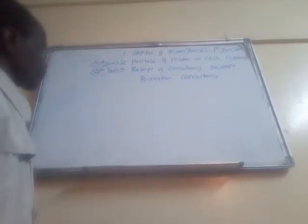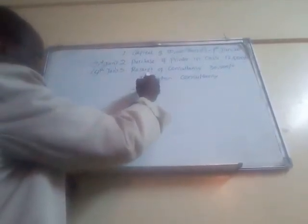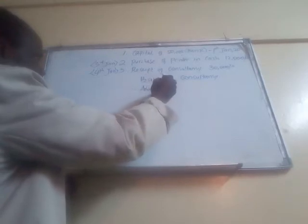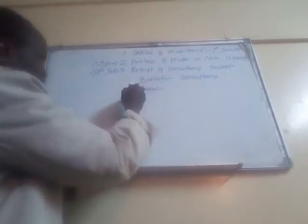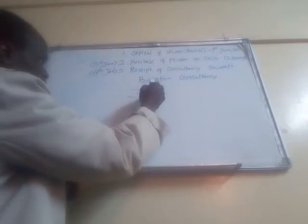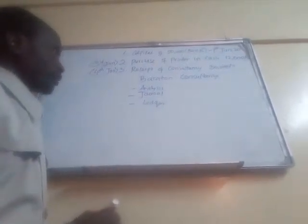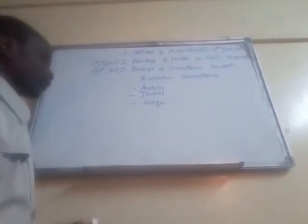To come up with a trial balance we will have to go through the accounting process. The first process is analysis, the second process is journal, and the third process is ledger. So let's try to analyze these three transactions.